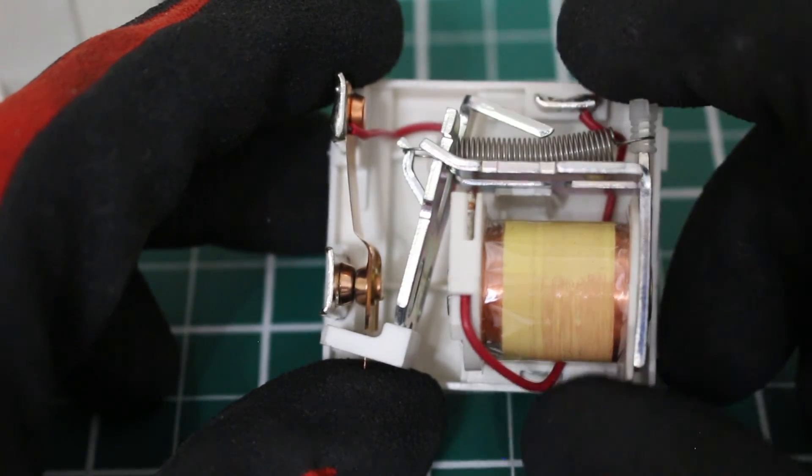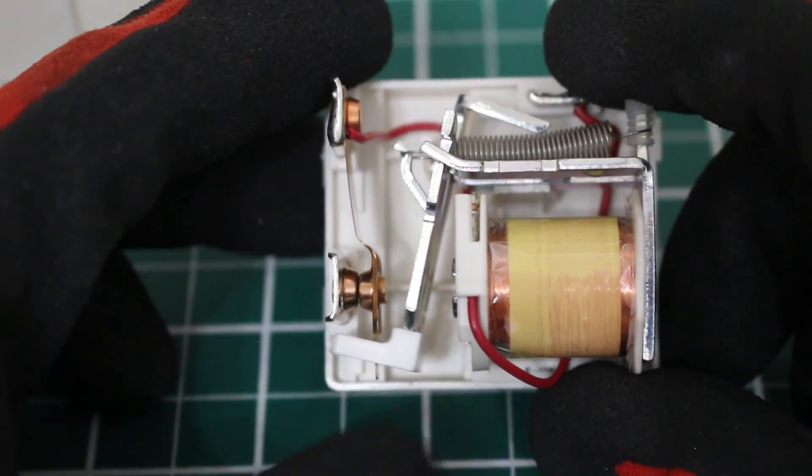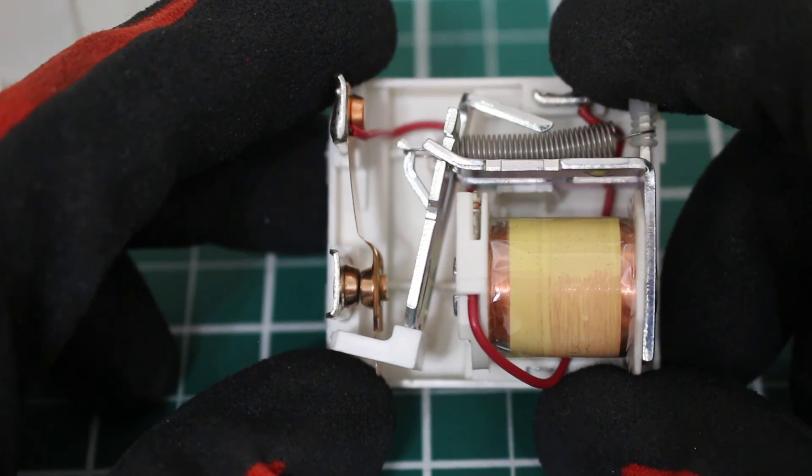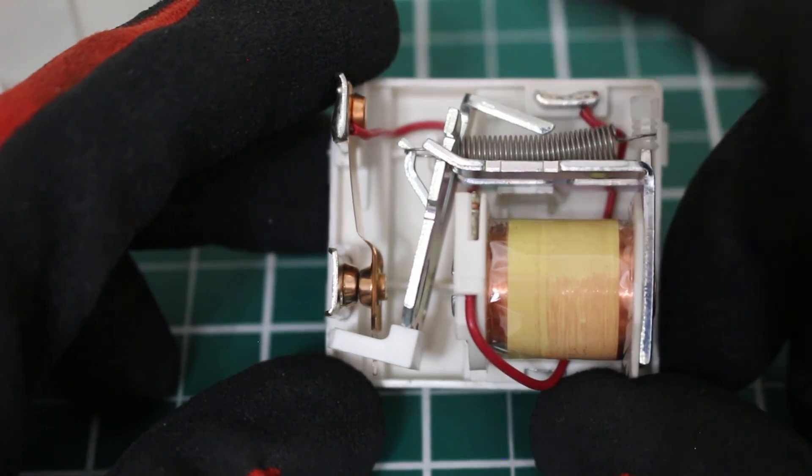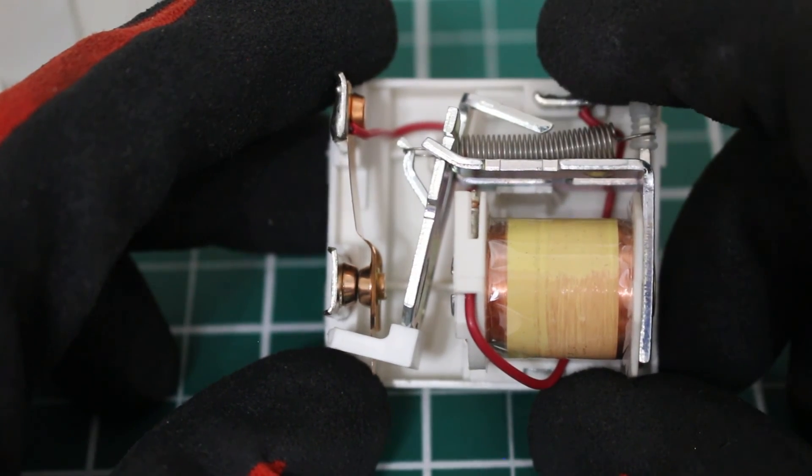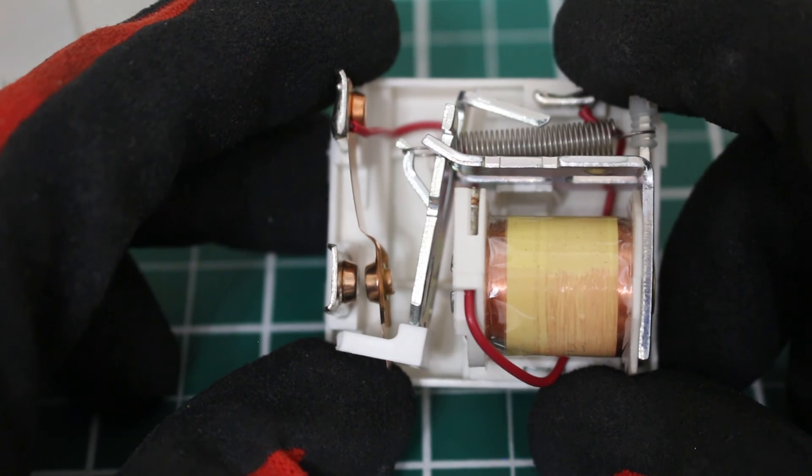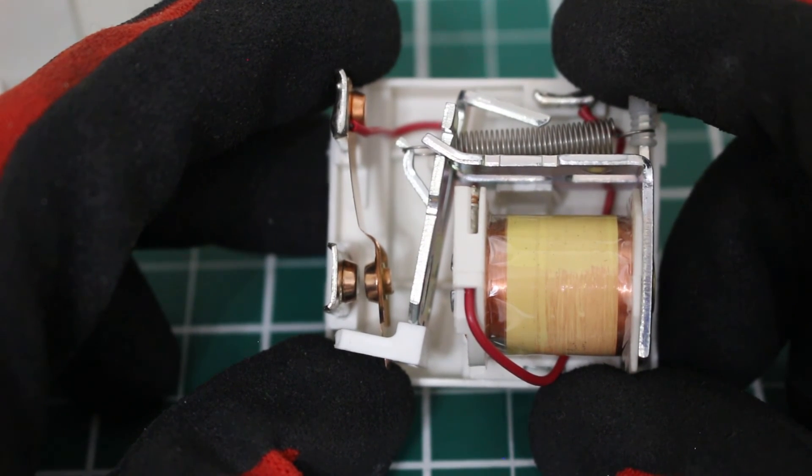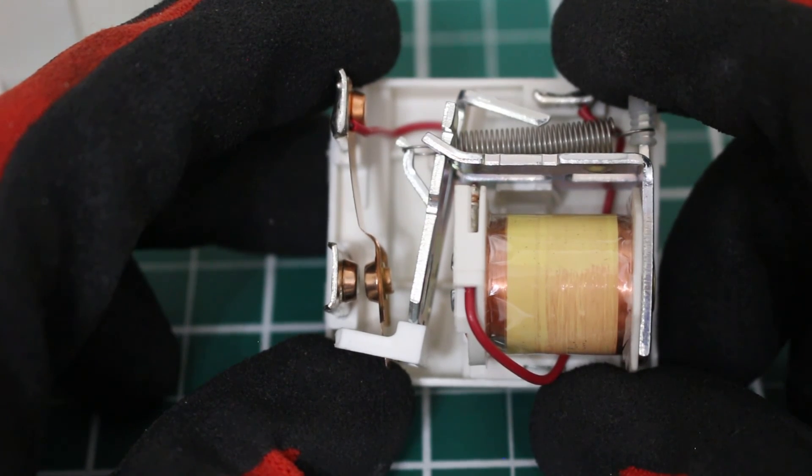So, power is going to come in, go through, start our motor, run through the run cap. Once that back EMF overcomes the force of this spring, we're going to open our contacts and we're going to remove power from our start cap. And the compressor continues to run.